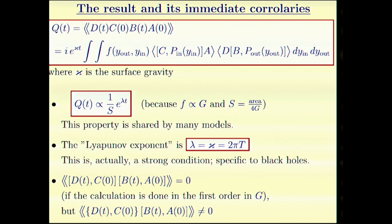Furthermore, if we calculate the correlator between two commutators or the commutator squared in the first order in the gravitational constant, we get zero. If we calculate this correlator in the first order in the gravitational constant, we get something non-zero. This is also a good test. But, of course, it's a bit mysterious why it's 2πT.